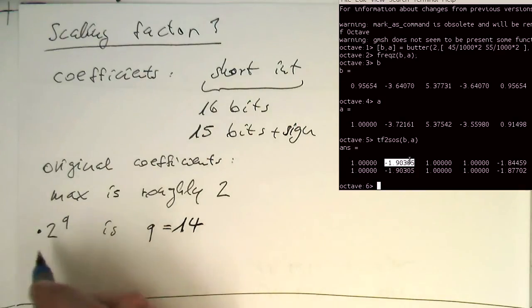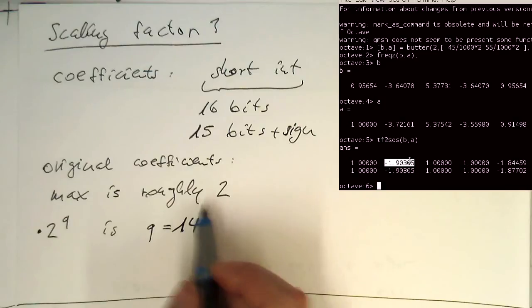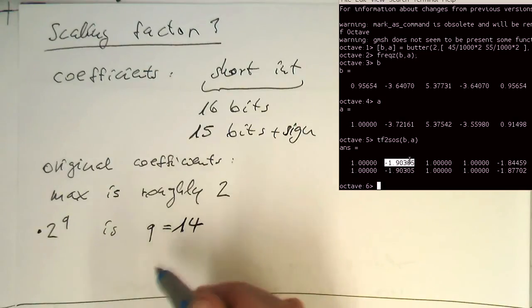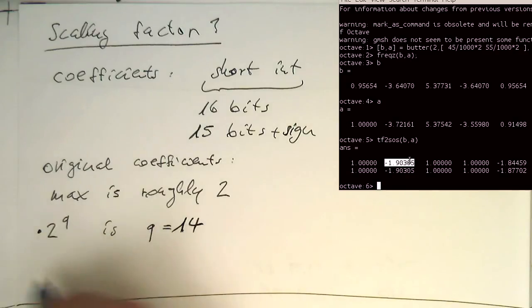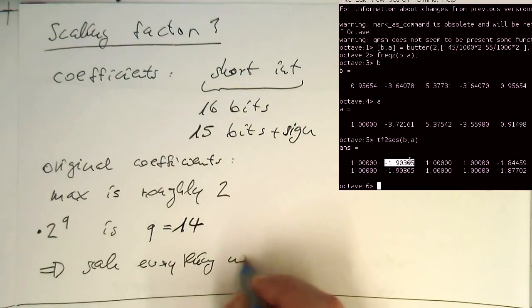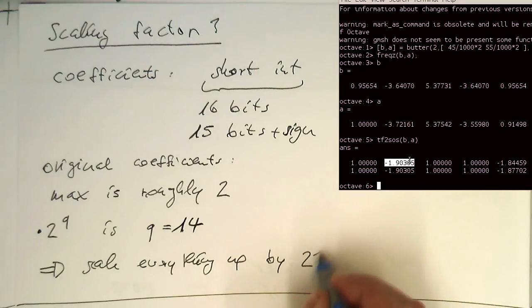Obviously we see maximum 2 here, then we are reaching our 15 bits plus the sign. So therefore in this case, to scale everything up by 2 to 14.